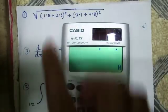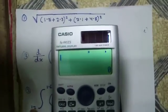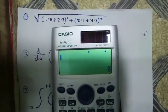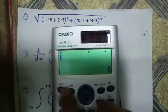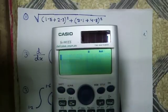The second feature is expression calculations. Suppose I want to find out the value of a whole expression — I can enter the whole expression at one go using MathIO and the root button.